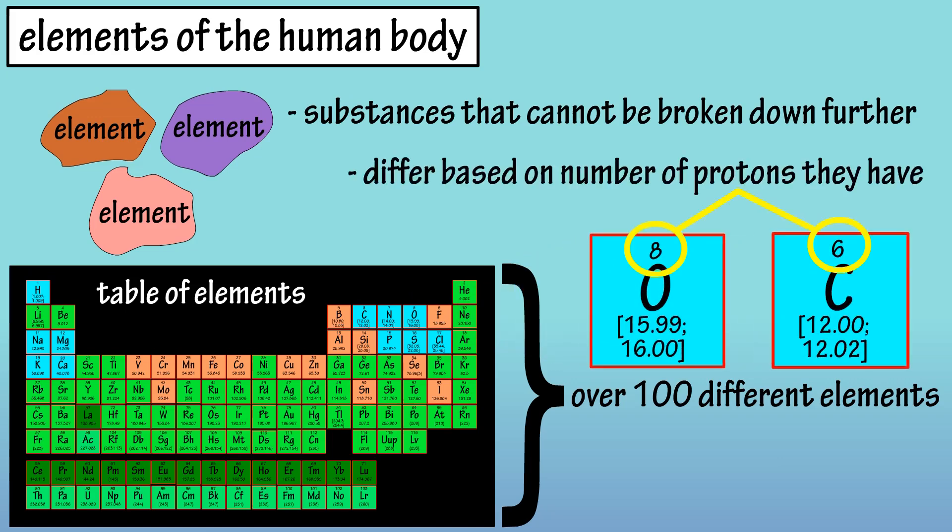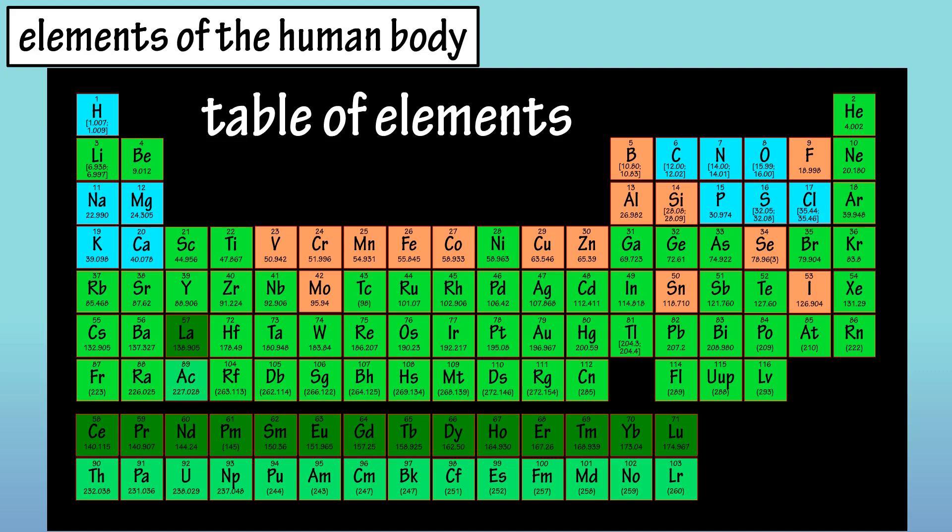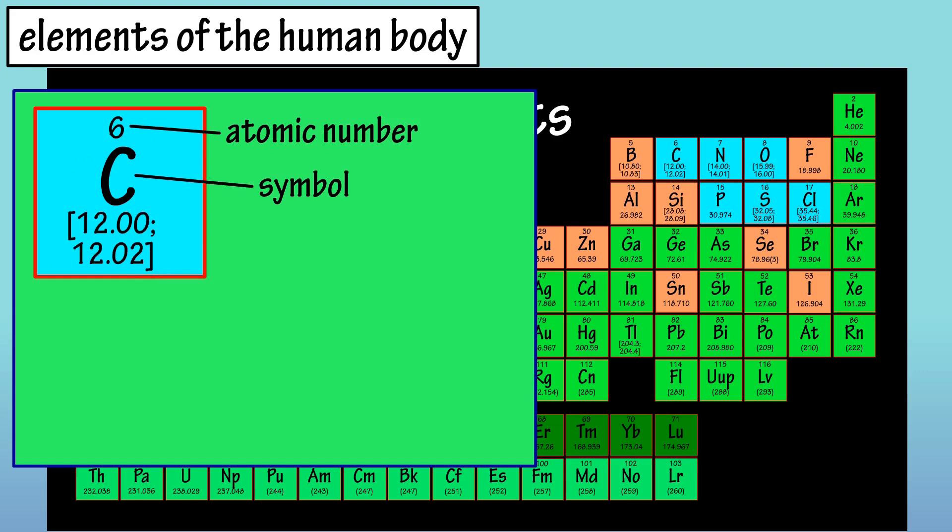Elements differ based on the number of protons in their nucleus. The table of elements is shown on the screen, and each element is identified by its symbol and atomic number.